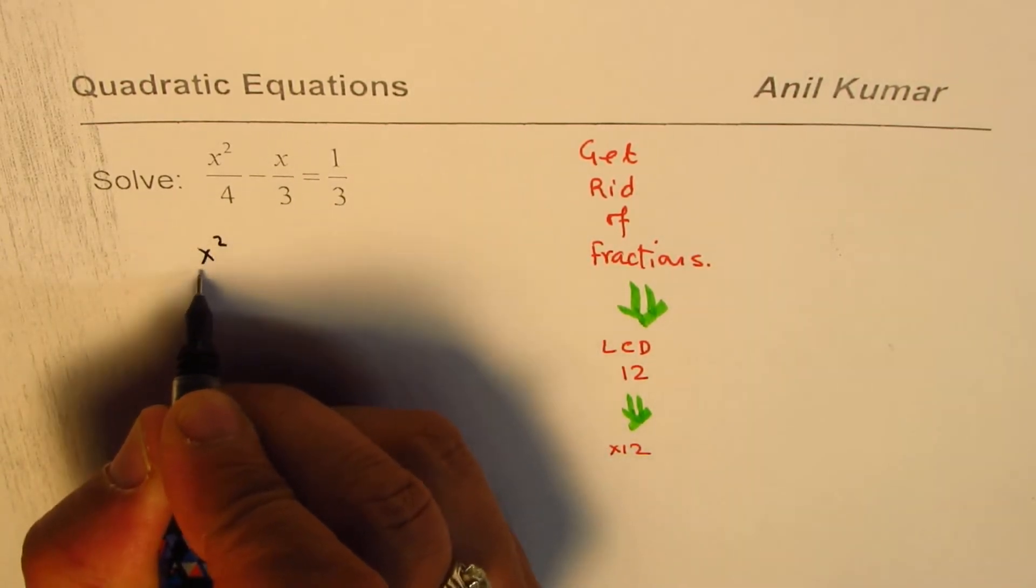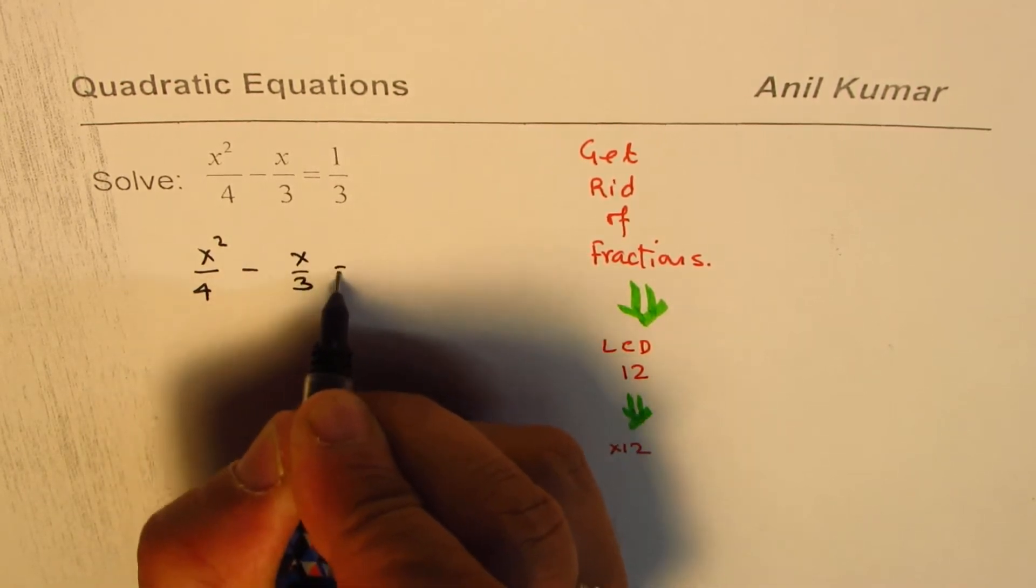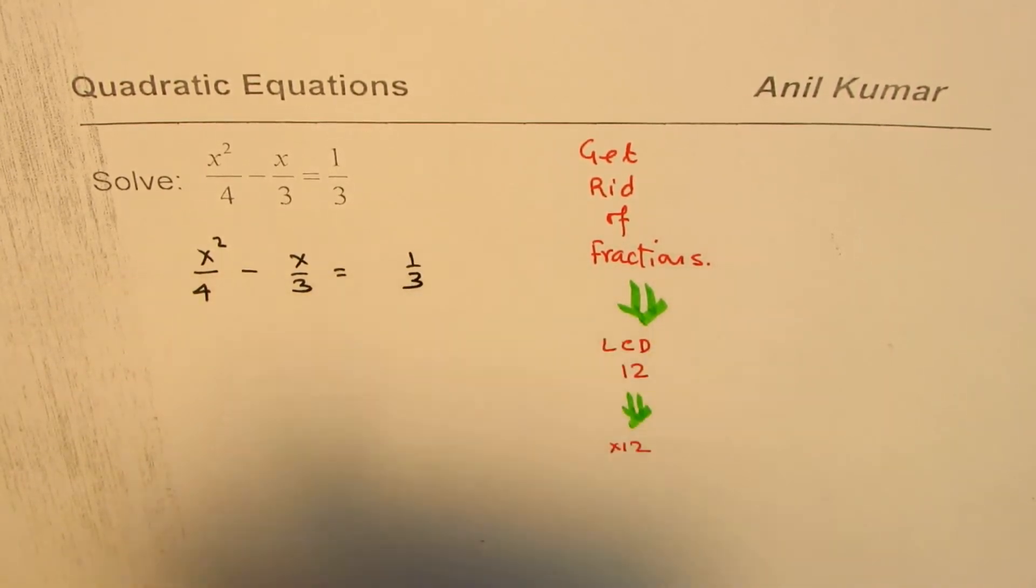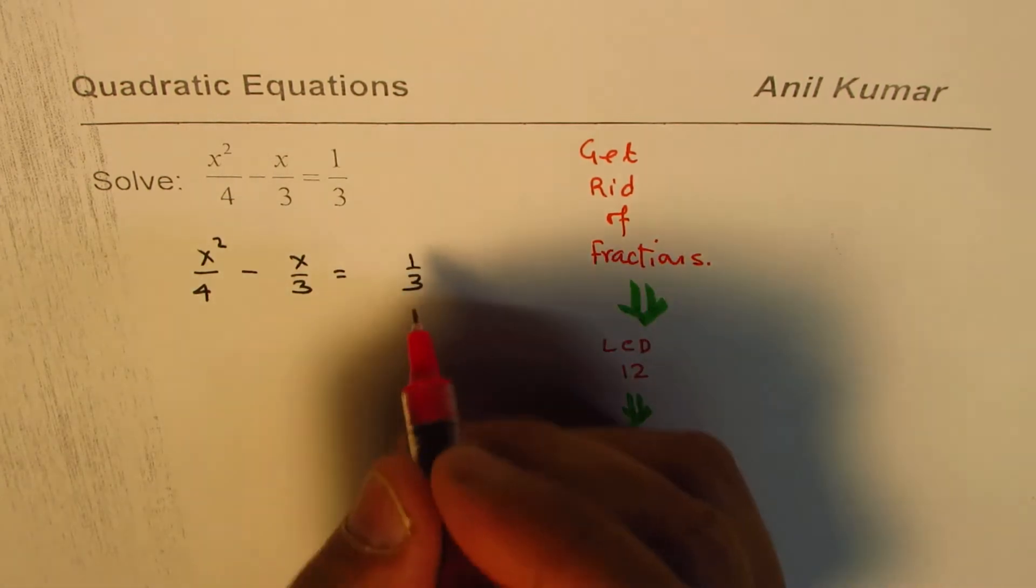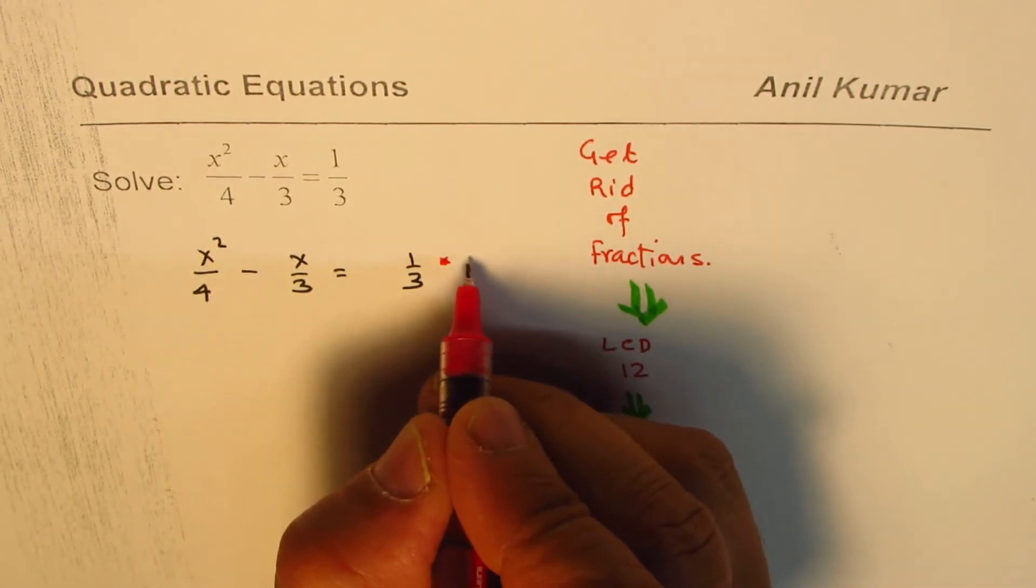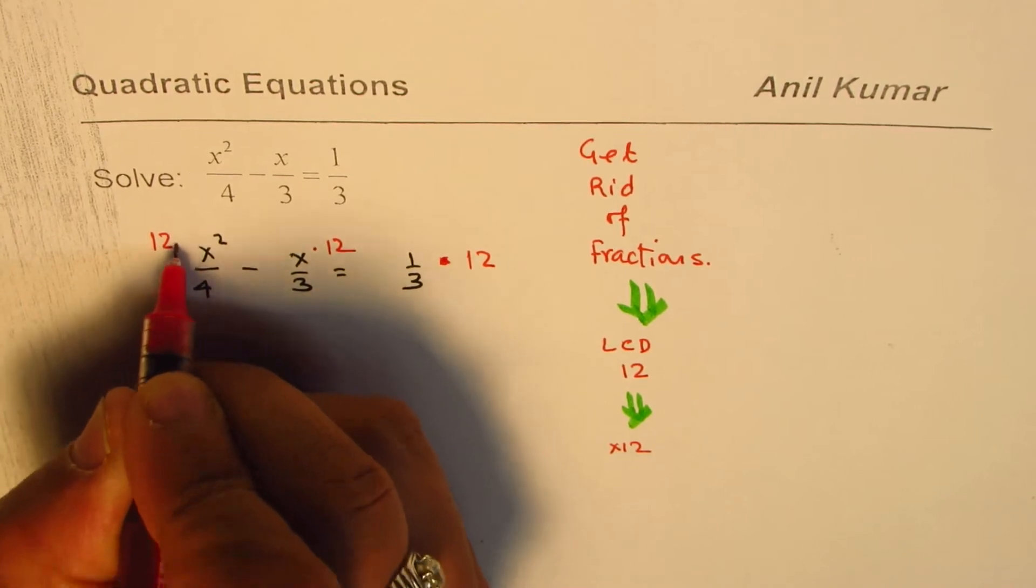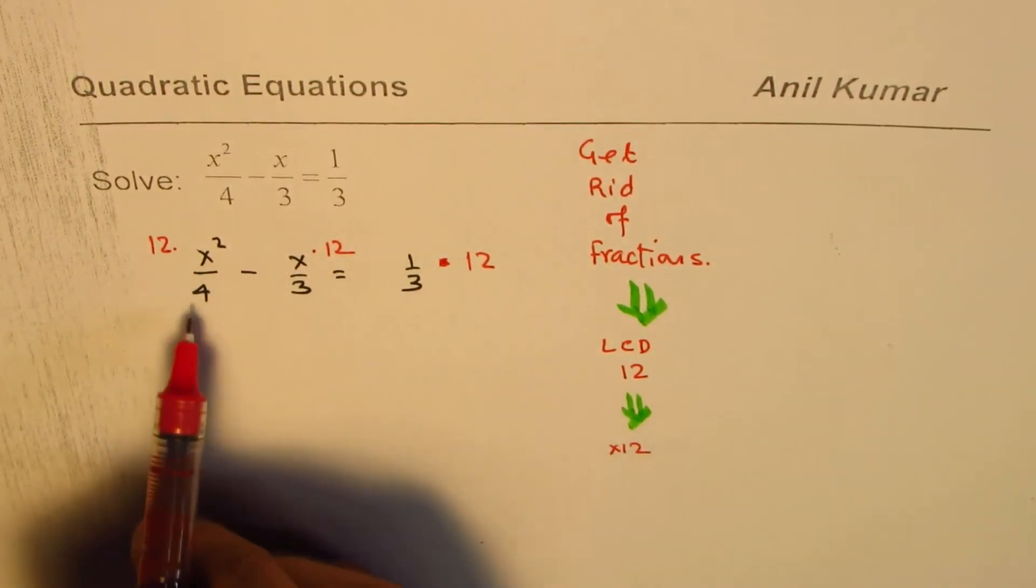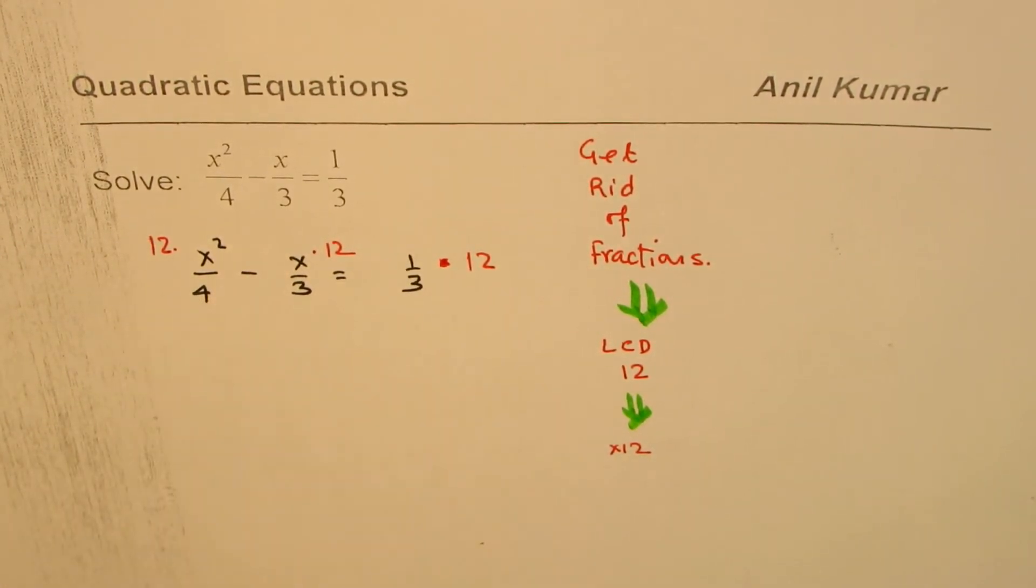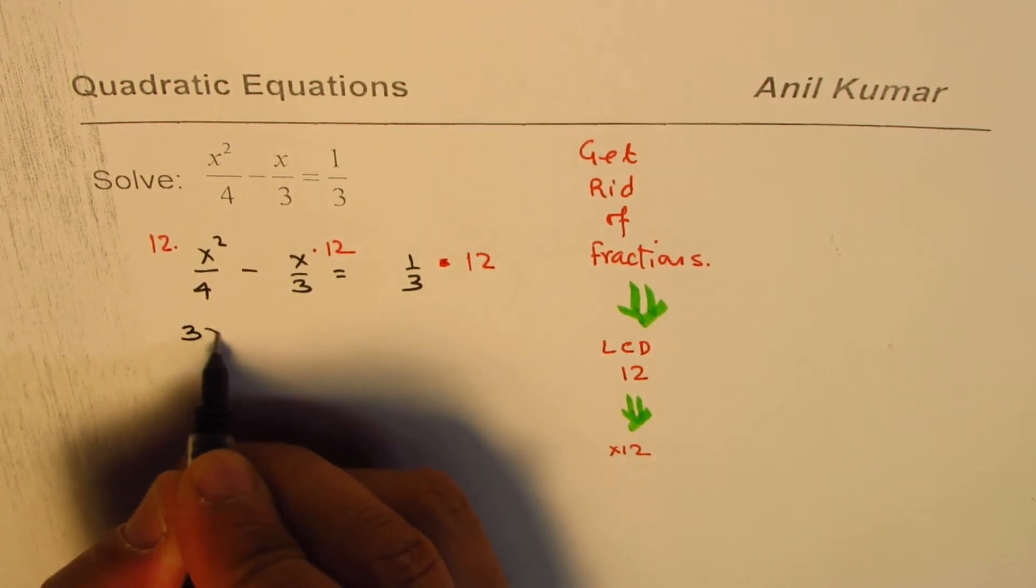So we have x squared over 4 minus x over 3 equal to 1 over 3. We will multiply each term. Times 12, times 12, times 12. So when you do that, 12 divided by 4 is 3. I could write this as 3x squared. 12 divided by 3 is 4, so minus 4x.